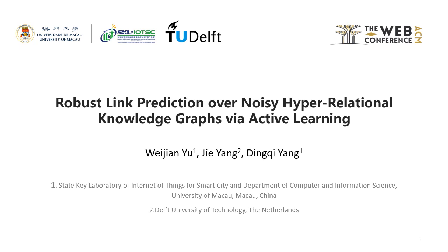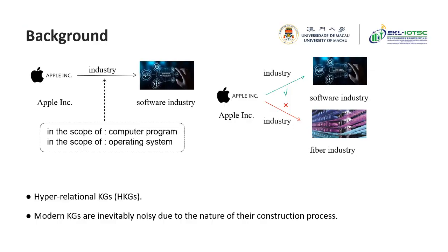This video is for our paper, Robust Link Prediction Over Noisy Hyper-Relational Knowledge Graphs via Active Learning, which is accepted by WWW 2019. Hyper-relational knowledge graphs, where an arbitrary number of key-value pairs are associated with a base triple, have become popular in modern KGs.